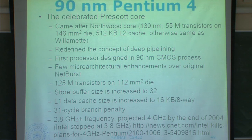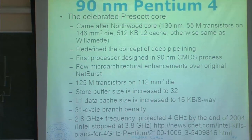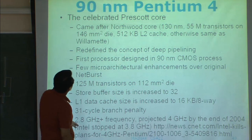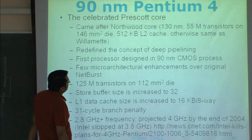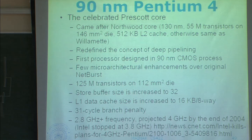Willamette was 180 nm. In between there was Northwood, which was 130 nm with 55 million transistors on a 146 mm² die. The only change from Willamette to Northwood was that they doubled the size of the L2 cache.